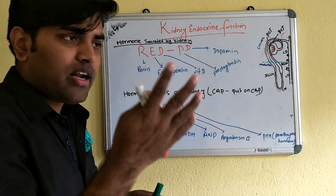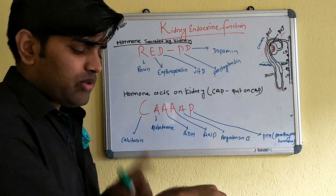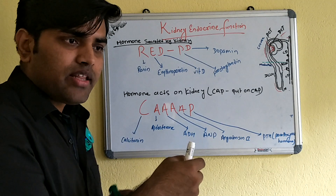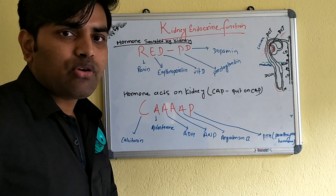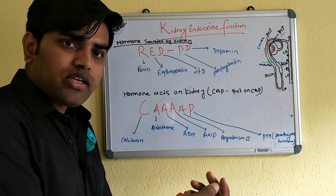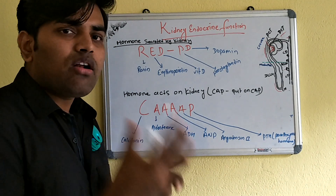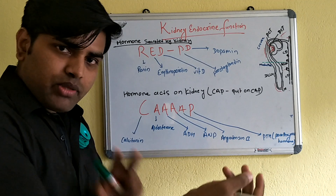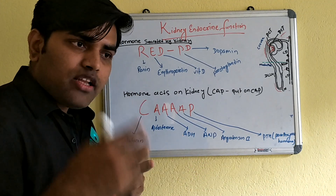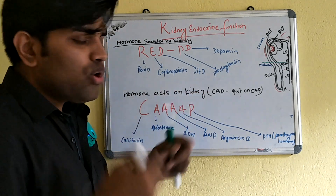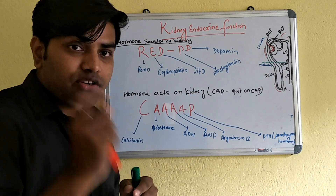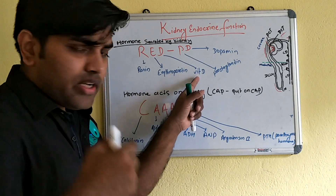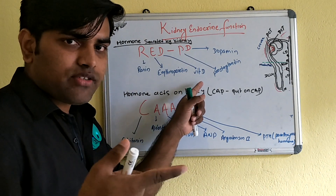Vitamin D has many sources; the main one is sunlight. 7-dehydrocholesterol in the skin is activated by sunlight and converted to cholecalciferol. The liver then converts it to 25-hydroxycholecalciferol. However, all these are precursor/pro-forms. The kidney converts 25-hydroxycholecalciferol into 1,25-dihydroxycholecalciferol, which is the active form of vitamin D.